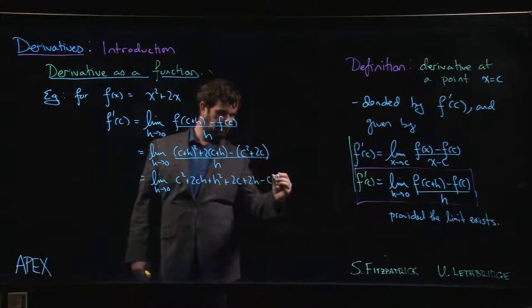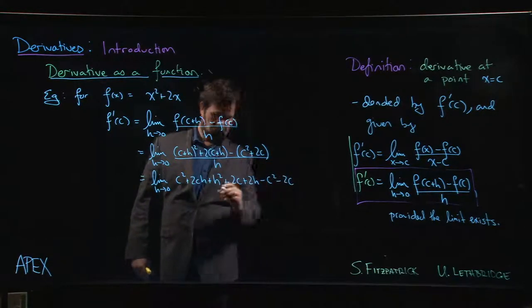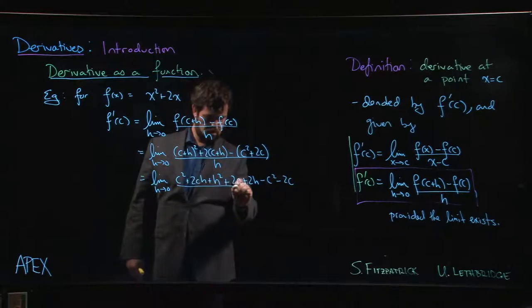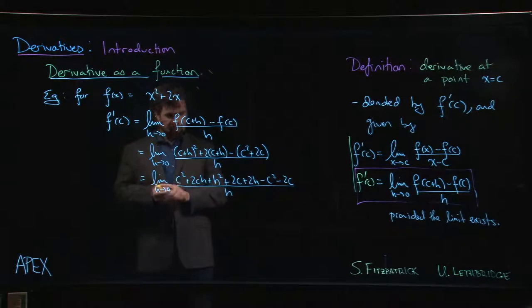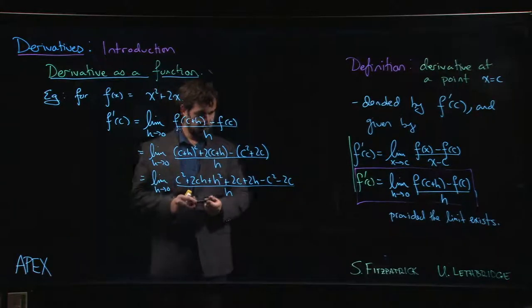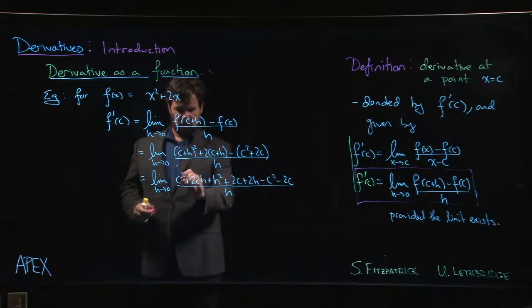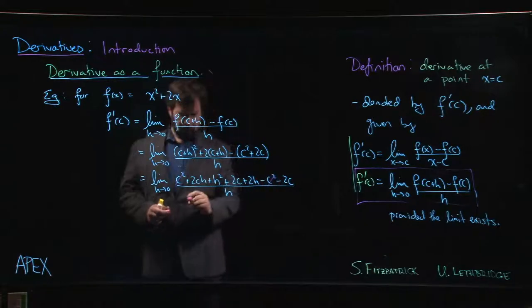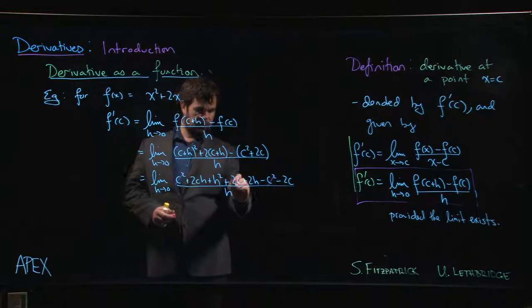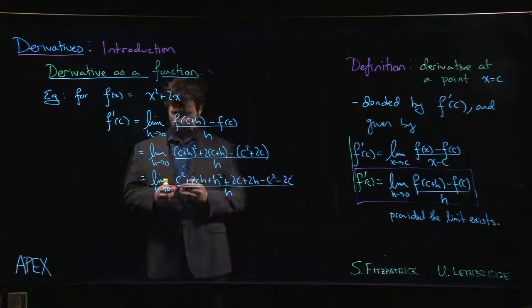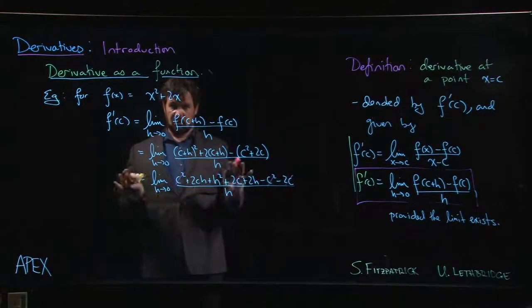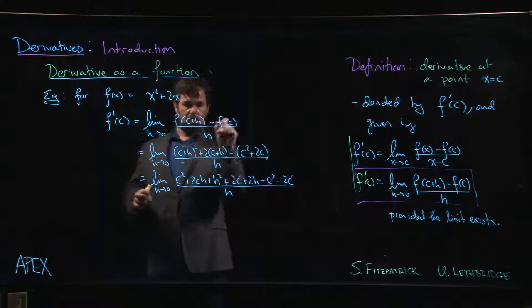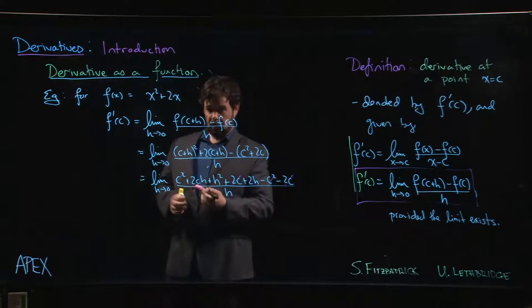Limit h going to 0. Here we have c squared plus 2ch plus h squared plus 2c plus 2h. Push that minus sign through. Minus c squared minus 2c, all over h. Now, it looks a mess, but c squared minus c squared cancels.